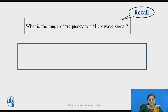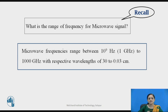Before going to start today's session, we can pause the video here for a second and recall what is the range of frequency for microwave signal. The microwave signal is a very high frequency signal. The range of these frequencies can start with 1 Gigahertz and end with thousands of Gigahertz, where Gigahertz is 10 raised to 9 hertz, with respective wavelengths of 30 to 0.03 centimeter.